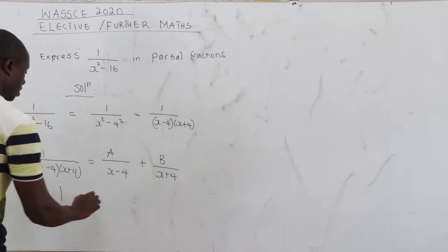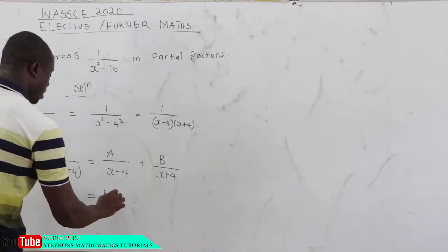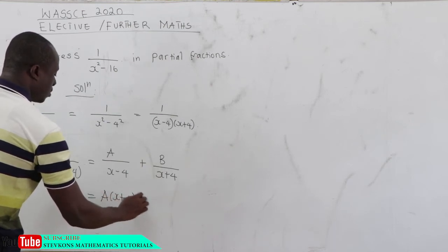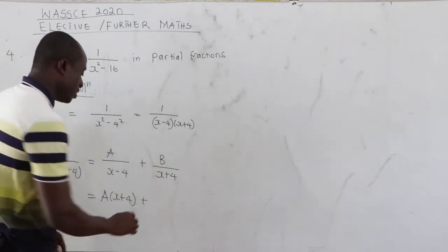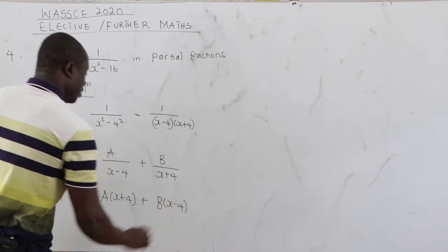everything will cancel and we have 1. Now x minus 4 will cancel, so we have A x plus 4. And then x plus 4 will cancel, so we have B x minus 4.